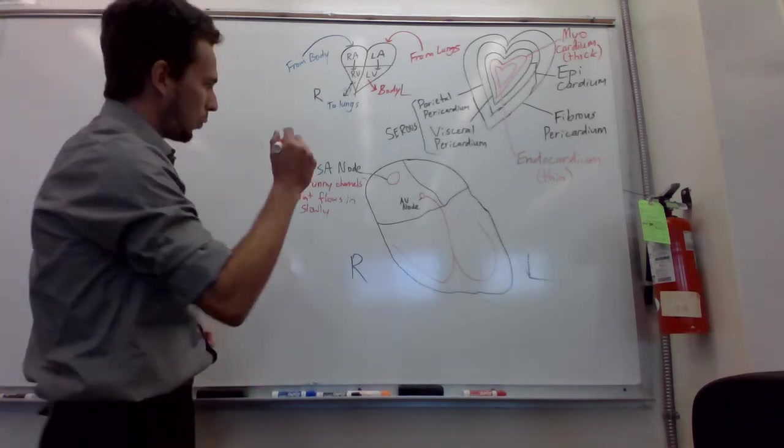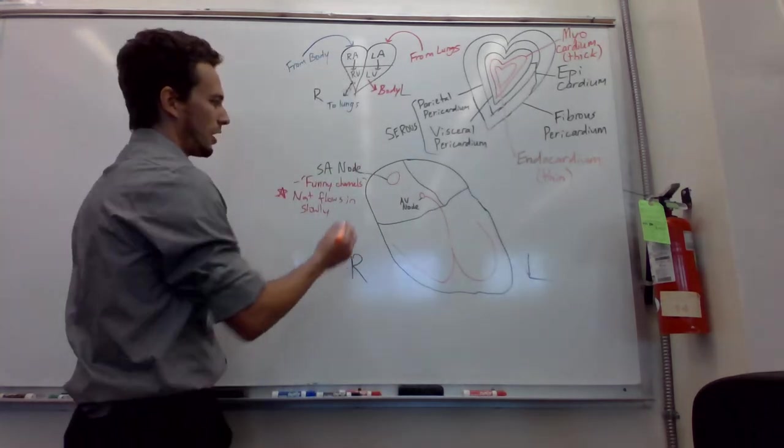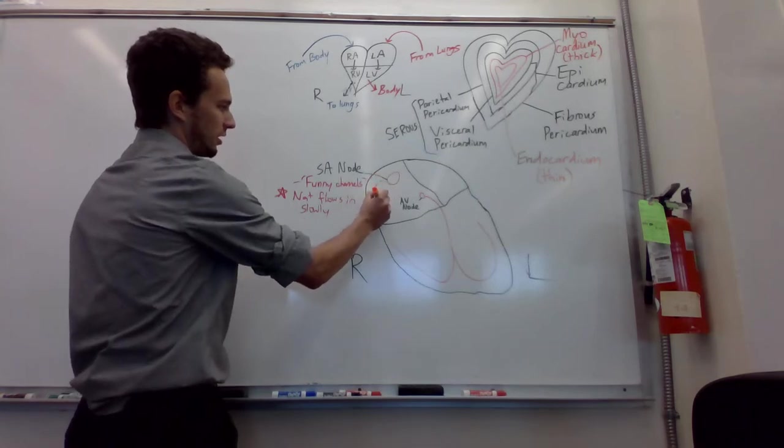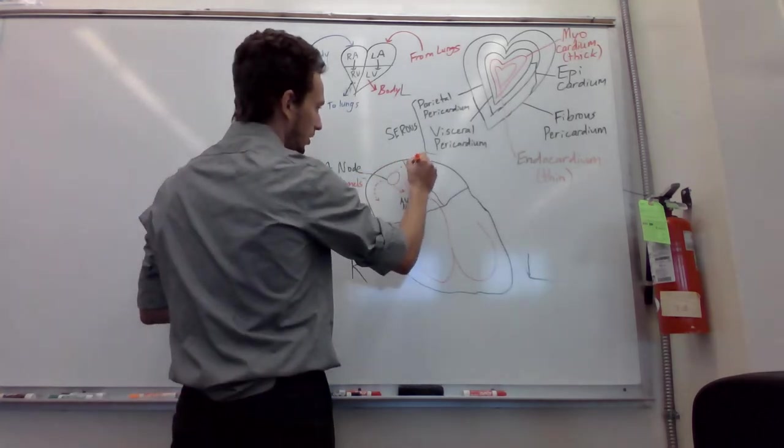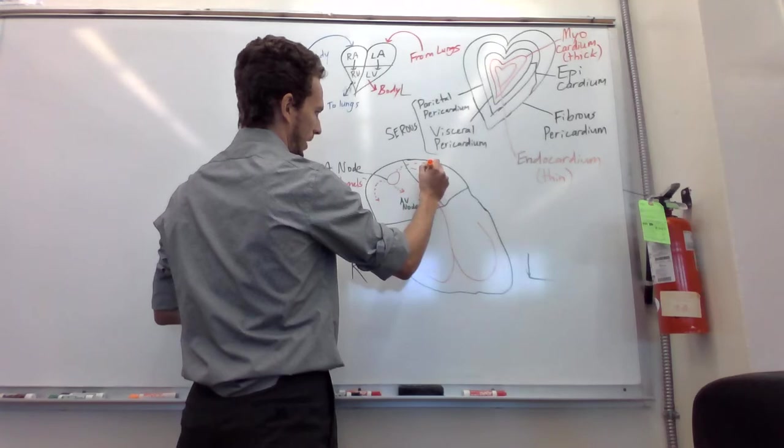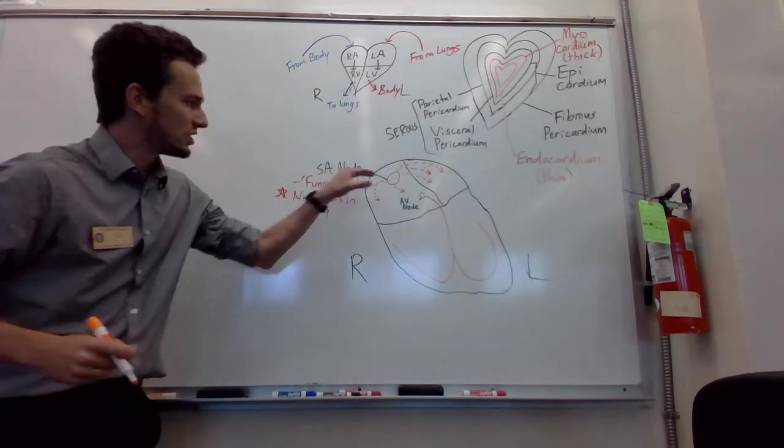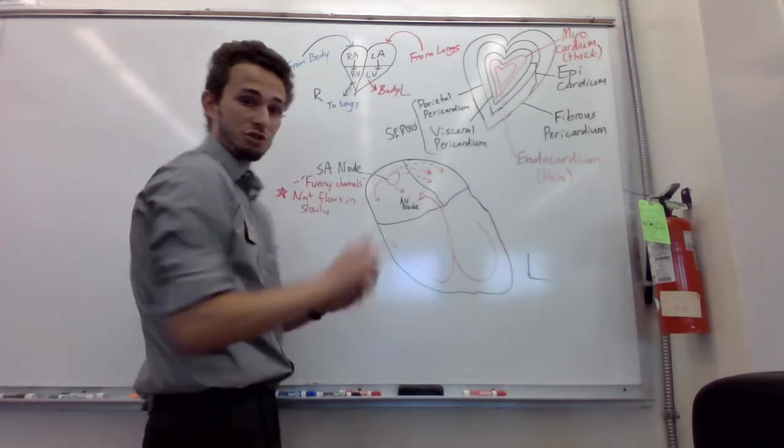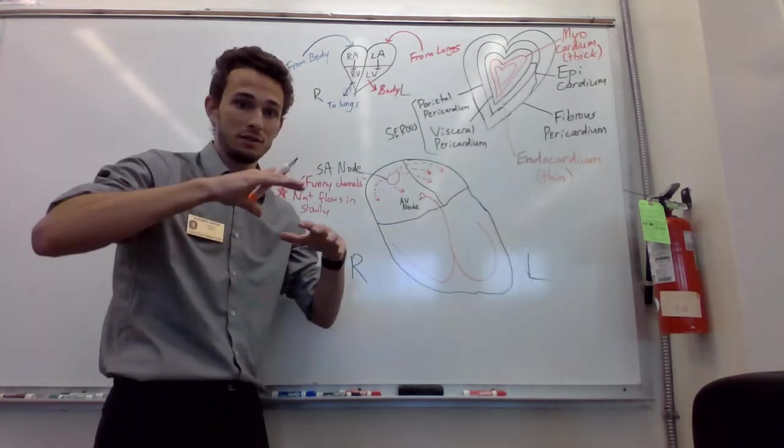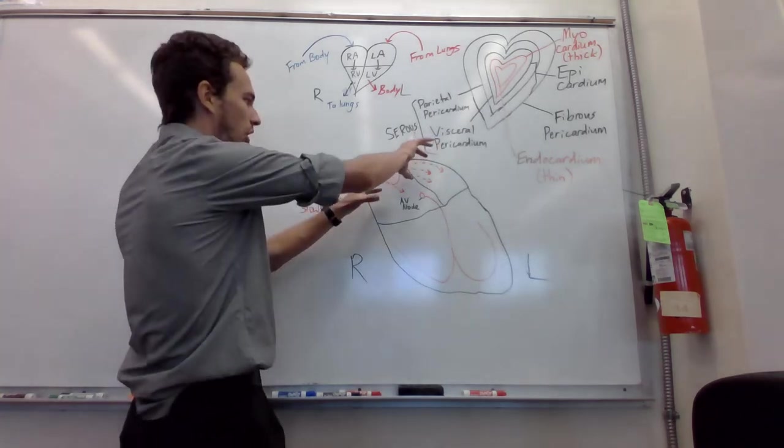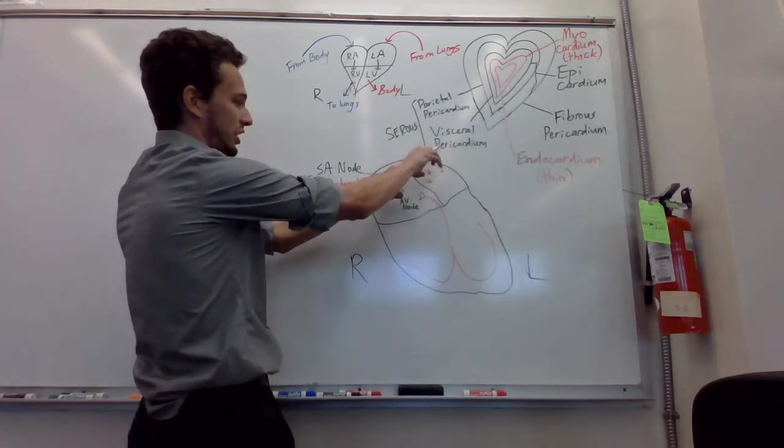But when that reaches an action potential, the action potential will be sent in a few different directions. First off, it'll be sent basically throughout this atria. So this would be the right atria and it will also shoot over and depolarize the cardiac myocytes in the left atria. Why is this important? Since it's shooting these action potentials only to the atria first, the atria will contract once all those myocytes are depolarized. All of them will contract in synchrony. So action potentials are sent all these to the muscles and then the atria contract.